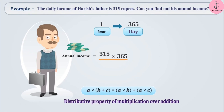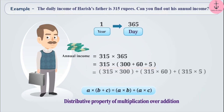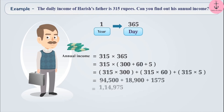That is, 315 into 365 can be written as 315 into (300 plus 60 plus 5). By applying the distributive property of multiplication over addition, we distribute and solve this. We get the annual income as 1,14,975 rupees.